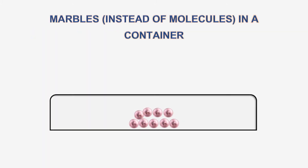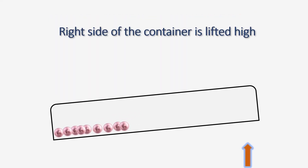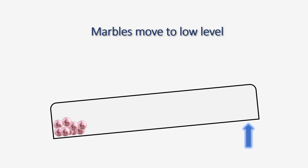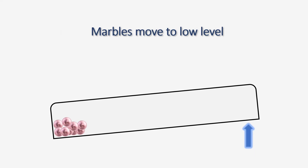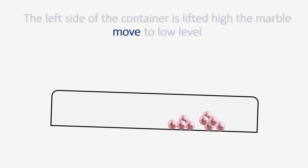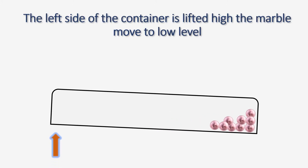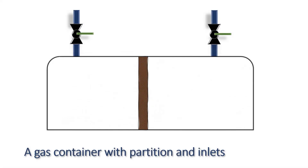For example, if we take a bunch of marbles, instead of molecules, in a container. With slight movement of the container, the marbles move from higher level to lower level. Similarly, the molecules move from the position of high concentration to lower concentration in a mixture, instead of the elevation effect that causes the marbles to move.